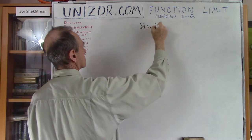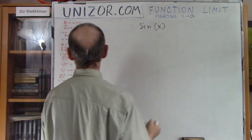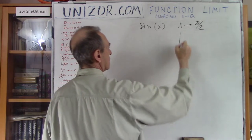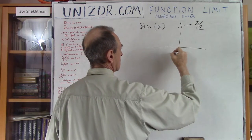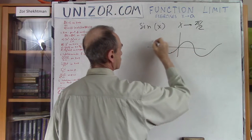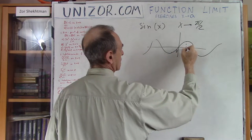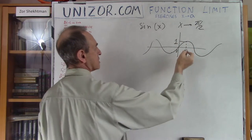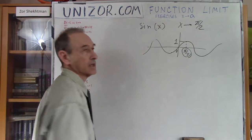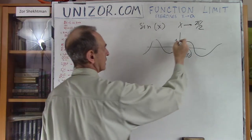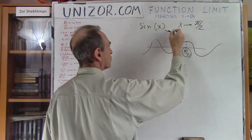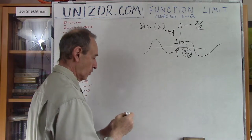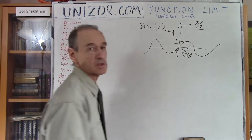Trigonometric functions — sine of x, in this case as x goes to π/2. Sine is a continuous function. You can just substitute π/2 into the sine and you will get the value of 1. So this function goes to 1 as x approaches π/2. There are no problems with continuity in this case, so the limit of the function is equal to the function of the limit of the argument.